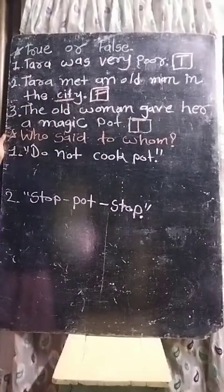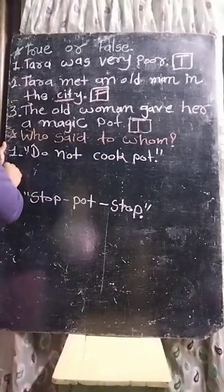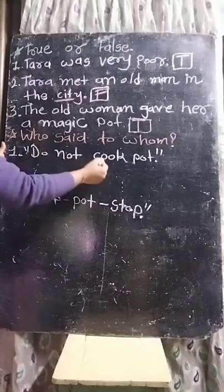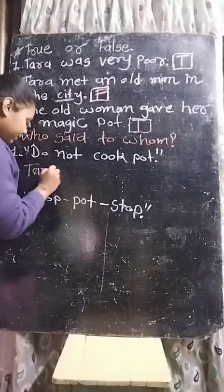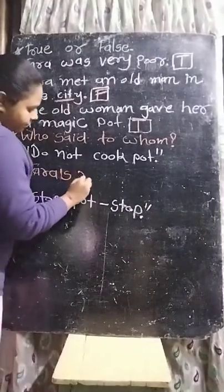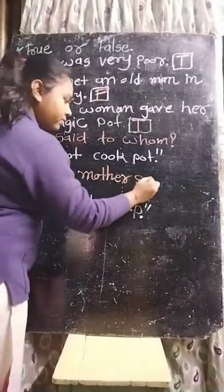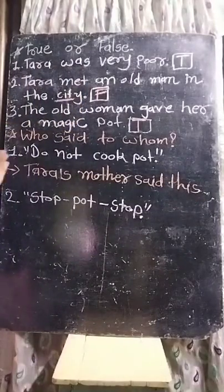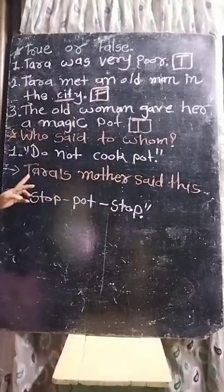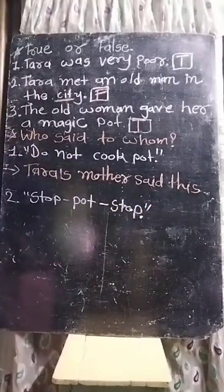Now, who said to whom? First one: 'Do not cook pot.' Who said this? Tara's mother said this.